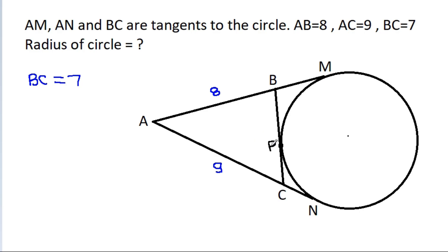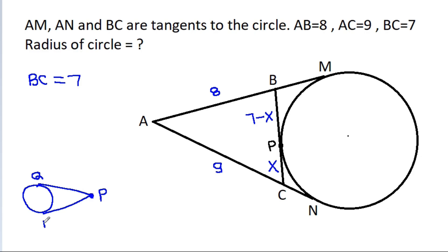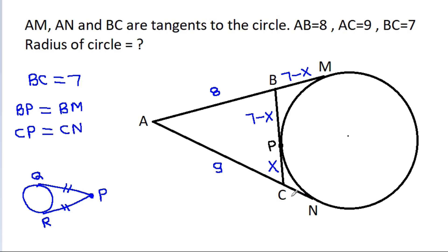If PC is x, then BP will be 7 minus x. In any circle, from an external point P, if we draw two tangents to this circle, Q and R, then PQ is equal to PR. So here, BP is equal to BM, so BM will be 7 minus x. And CP is equal to CN, so CN will be x.